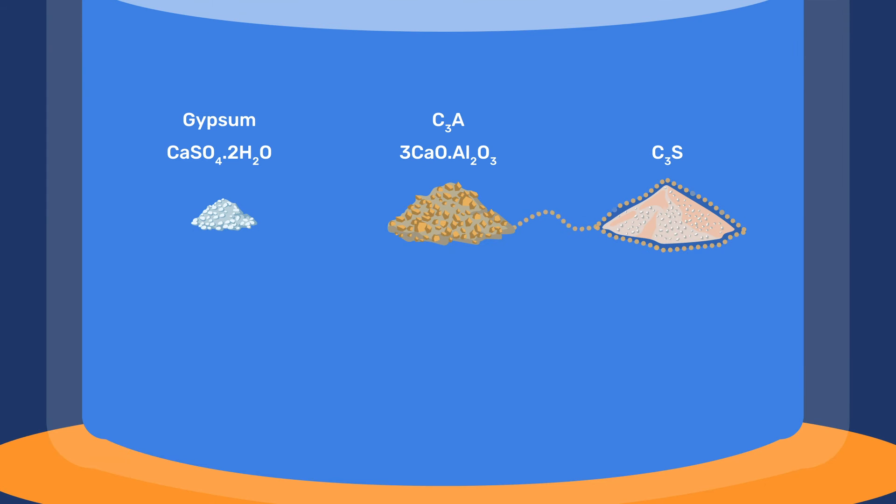If too little gypsum is added, not only will C3S hydration be delayed, but the material will also more rapidly lose its workability. This is referred to as flash set and probably also explains the short open time of natural cements.